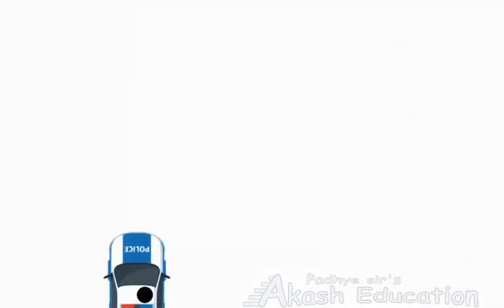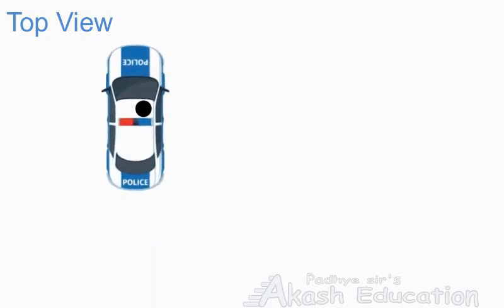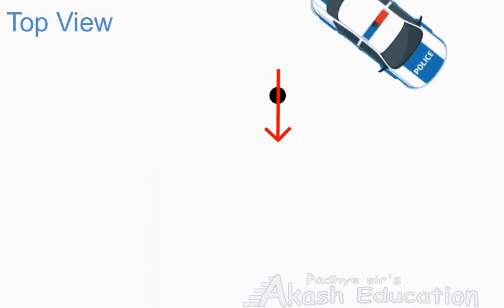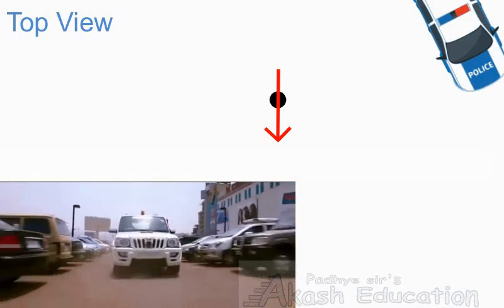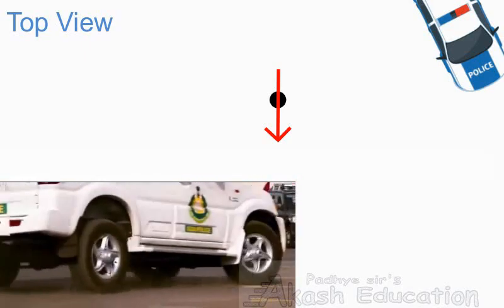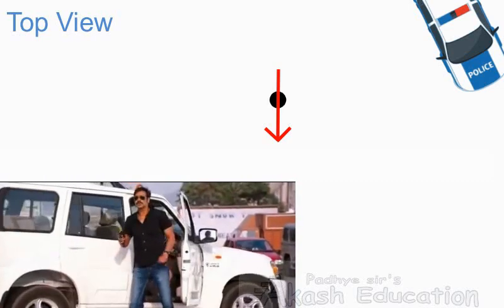To understand the situation, let's consider the top view. Here the black circle represents the main character. Now take a look at the actual motion of the car and main character. The black circle moves in a straight downward direction, which is perpendicular to the velocity of the car at that instant. We can easily observe this in the main video as well. Instead of the original video, I will use this small animation for explanation.